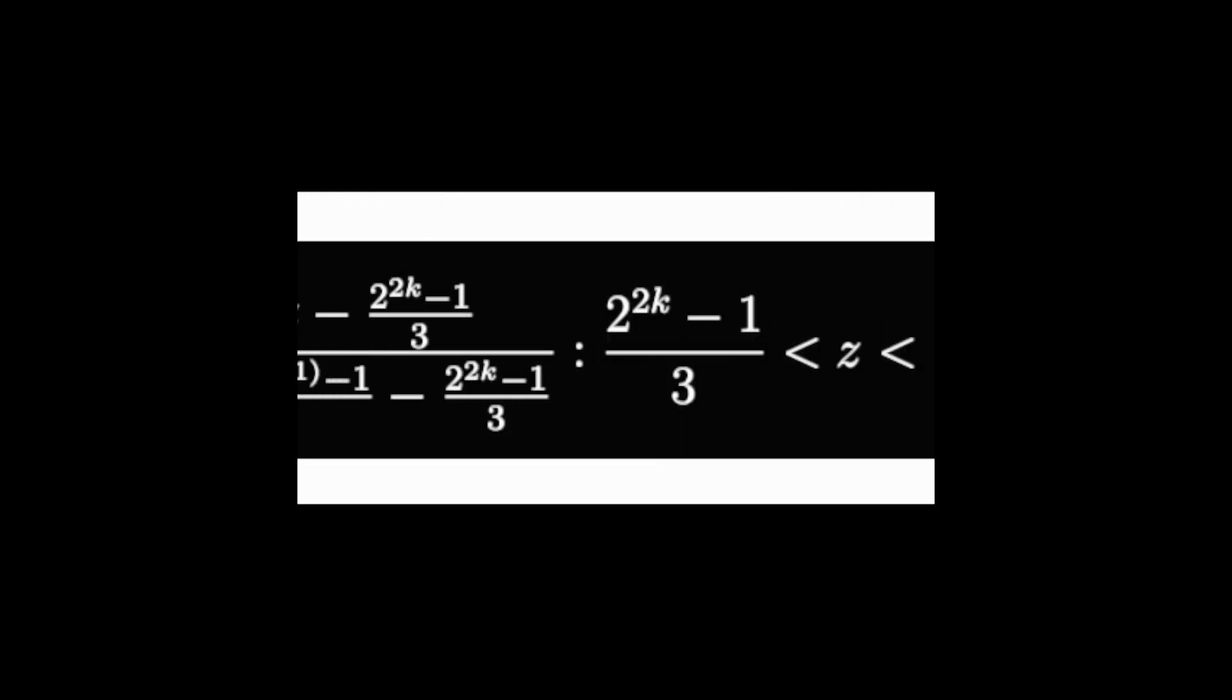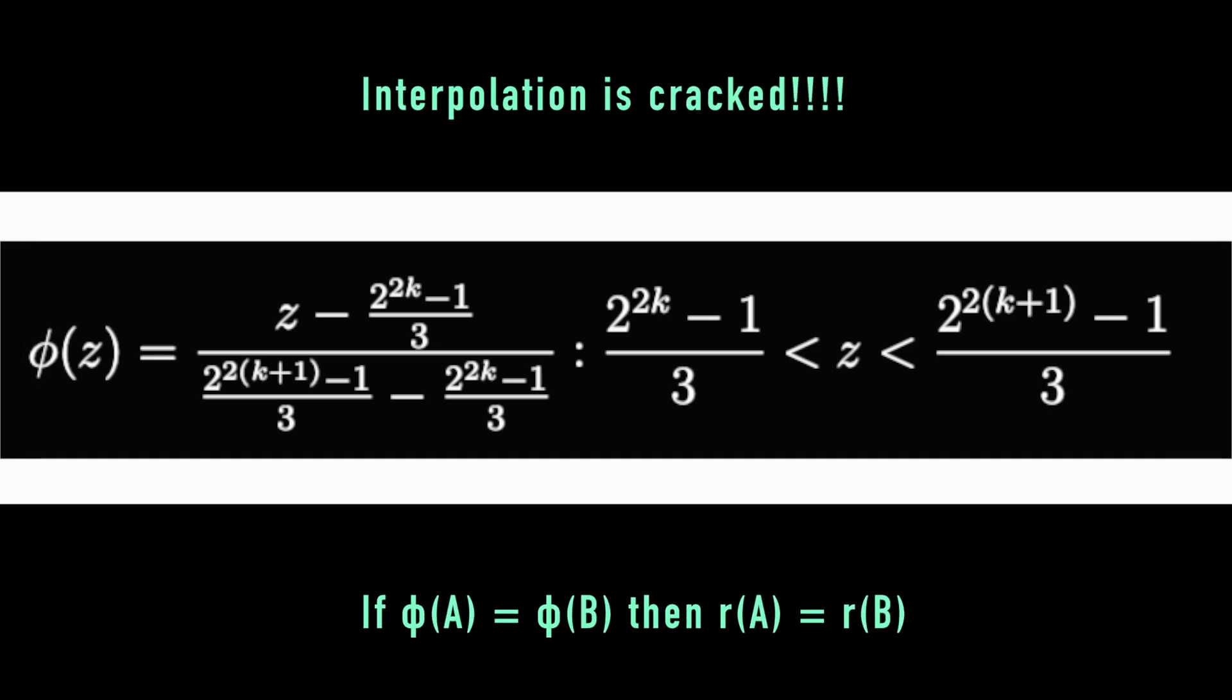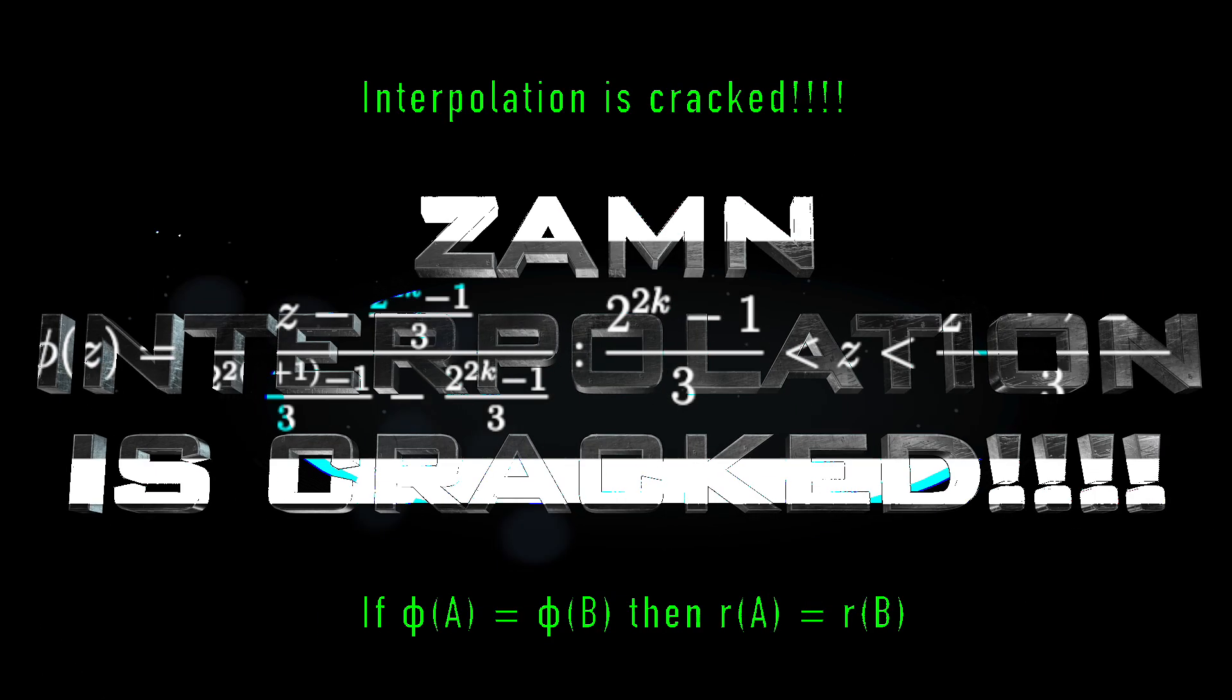And you might be thinking, well, that's probably just a weird coincidence. No, it works every time, for all odd integers. It always works. You take the lower number from that set, 2 to the 2k minus 1 quantity divided by 3. And you take the number above it. And you figure out where that number lies in between them. And if it comes out to the same value of phi for both of them, it takes the same number of recursive steps.